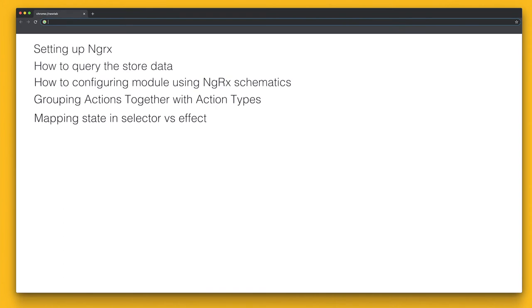Following, we'll be looking at root configuration, how template-driven forms work, and then when we have built the application, we'll look at how to build it in dev, in UAT, in prod — how you actually configure the whole pipeline to deploy on a cloud service.